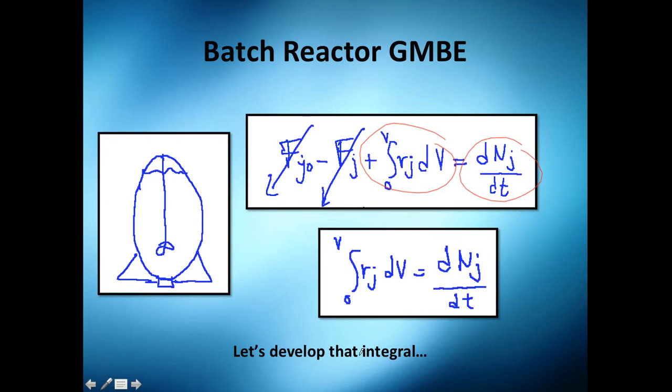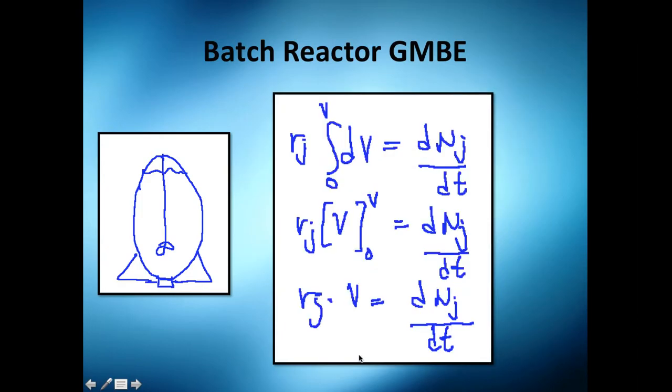So actually, you can end it here, but I'm going to develop that integral. We got this here. I take out this because this does not depend on the volume. Let's say it's uniform, it's perfectly mixed. So in this point and in this point and in this point, all the rate of reactions are the same, which is kind of ideal. Yes, I know, but we are doing this because it's our first molar balance in a batch reactor. So we want to call it ideal. So we take it away from the integral.